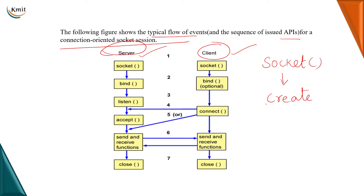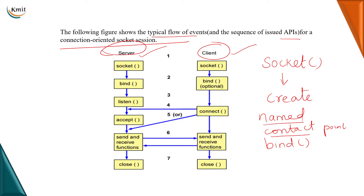The socket being created is a named contact point. To name it, we establish it using the bind function. This bind function will bind the IP address and the port number to make the socket a named contact point. So the second step is to bind the IP address and the port number, which is optional at the client side but compulsory at the server side. Once the socket is named, it is ready to listen — that is, it is ready for a connection from the client.